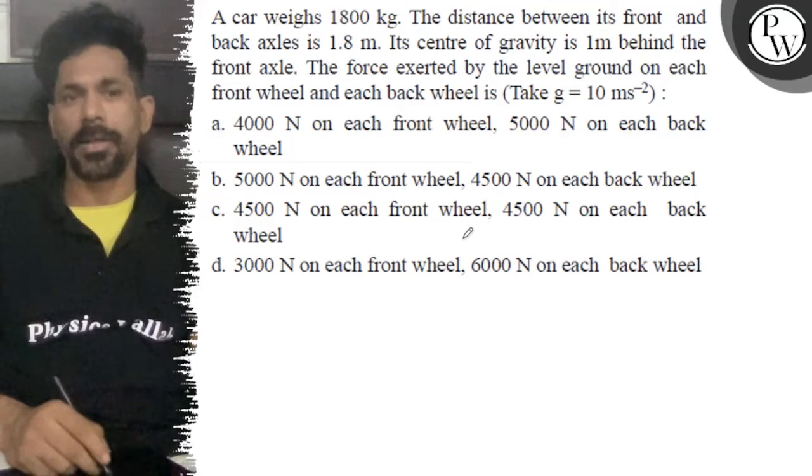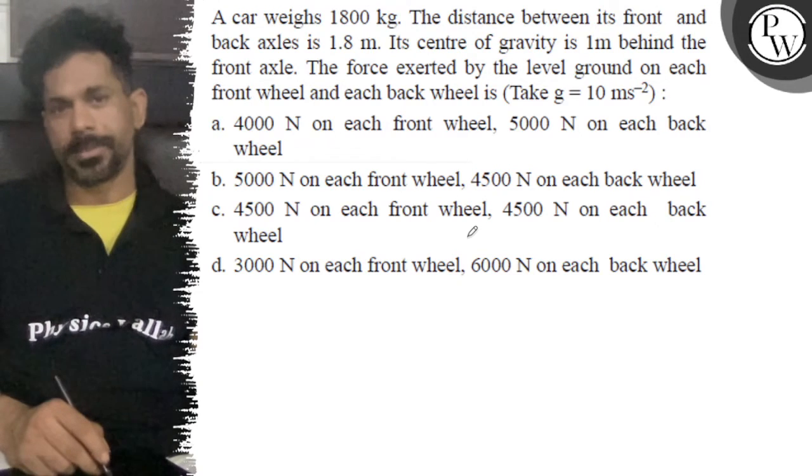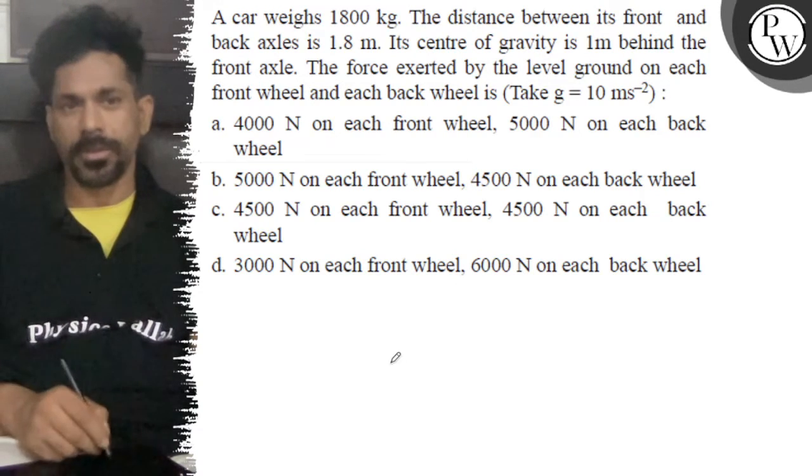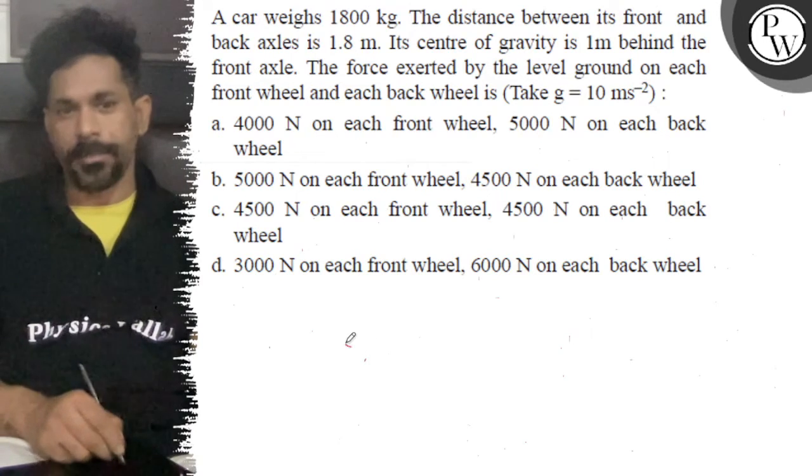Hello, let's see the question. A car weighs 1800 kg. The distance between its front and back axle is 1.8 meters. Its center of gravity is one meter behind the front axle. The force exerted by the level ground on each front wheel and each back wheel is...